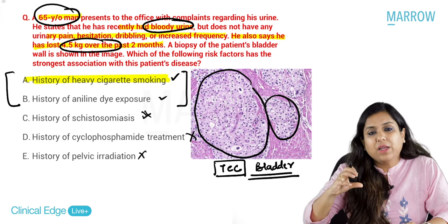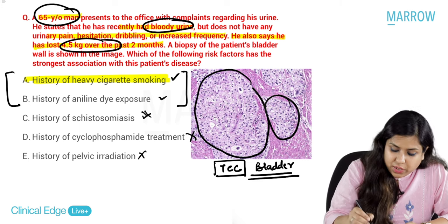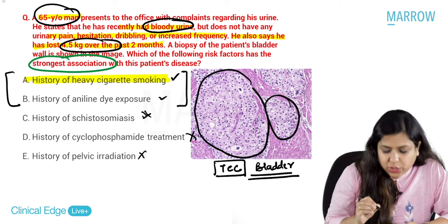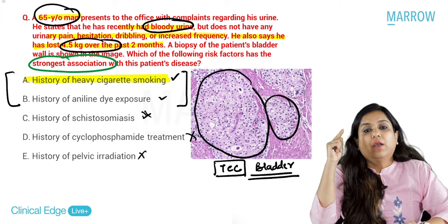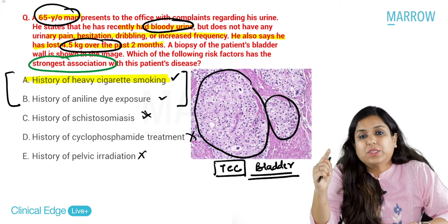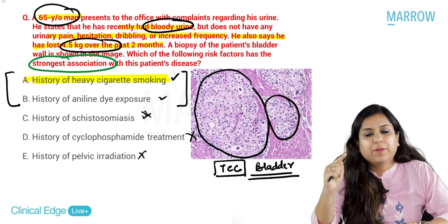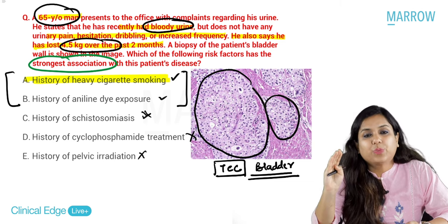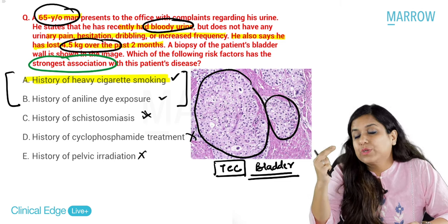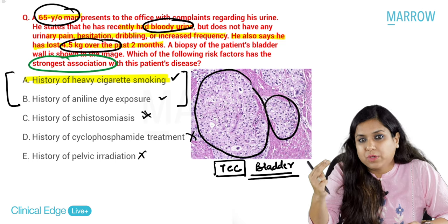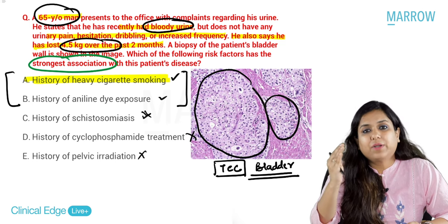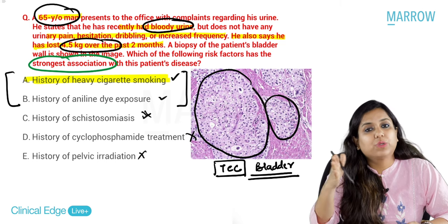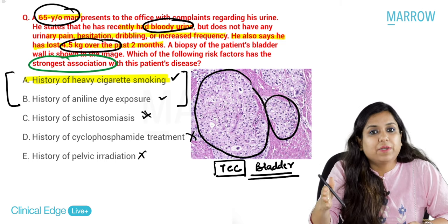I incorporated this question so please do not get confused with terms like strongest association. Read the question carefully. There will be questions where you are confused between two or three options, so revise your text very nicely so that confusion can be eliminated.